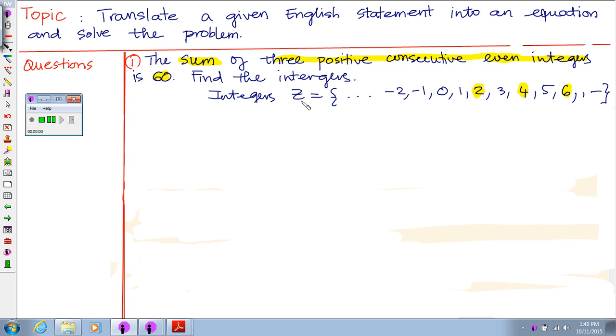Let's review the set of integers, or Z, which is the set of all negative whole numbers and positive whole numbers. You can see right here there are no decimals and fractions.